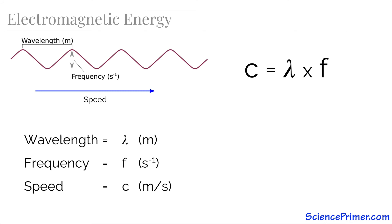The speed of electromagnetic energy is constant, traveling at 3 times 10 to the 8 meters per second in a vacuum. So if we know the frequency of a wave, we can calculate the wavelength, and if we know the wavelength, we can calculate the frequency.